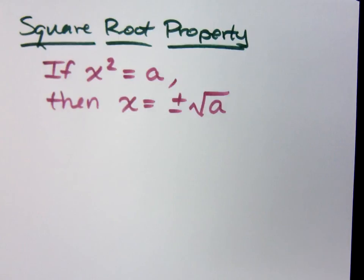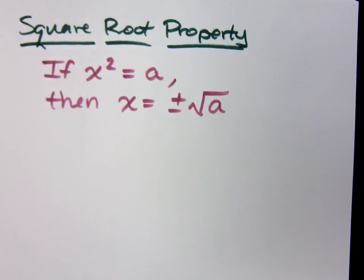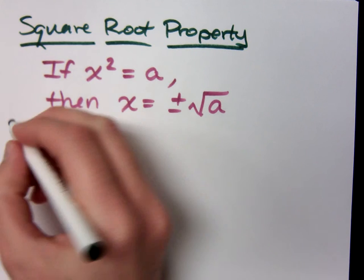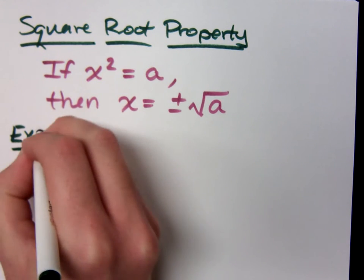Since this is x squared, how many solutions do I expect? Two. If I just took the square root of both sides and I just had the square root of a number, then it would not be right. Because I'm supposed to have two solutions.